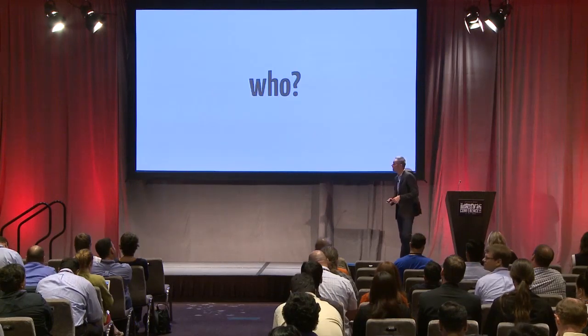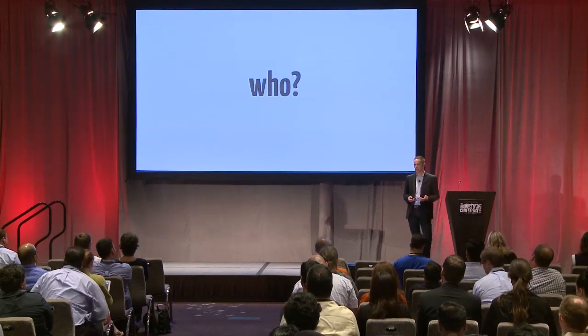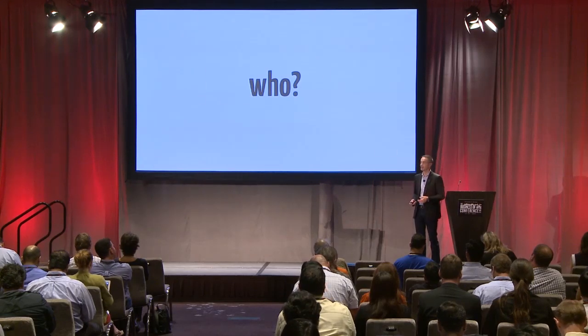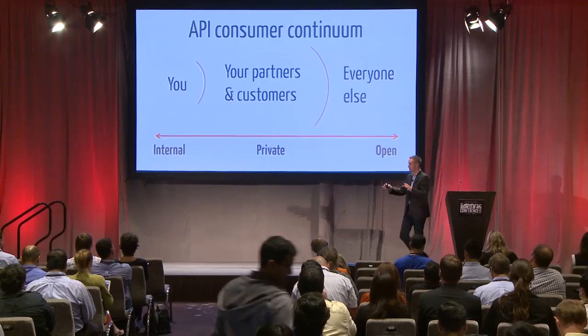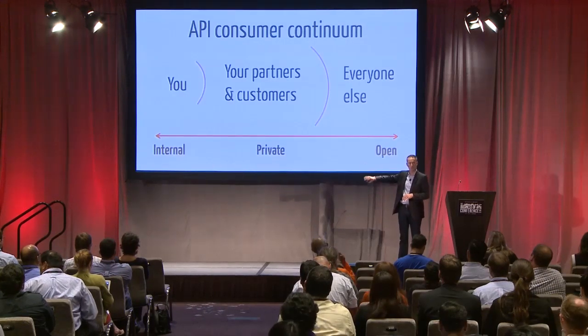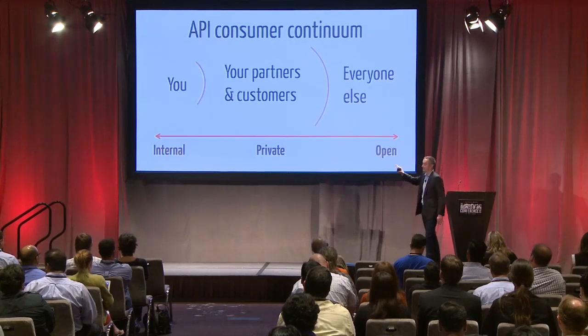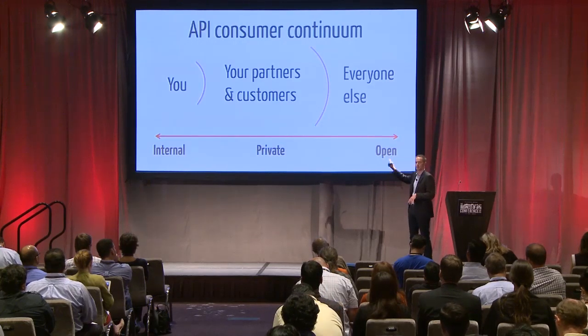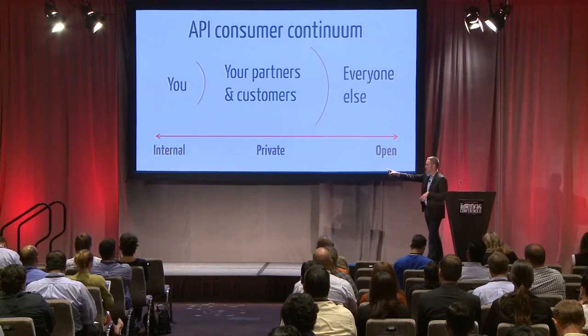The first question to think about before positing what your business model should be is why. The second question is who. Who is my API for? This is a product, and I'm going to have a consumer of this product. In our relatively young industry, the who's in the API marketplace are: me — my company consuming my own API — my customers and partners, or farther out, everybody else — the open API program. Internal, private, open, or public. Your business model and who are very intertwined.